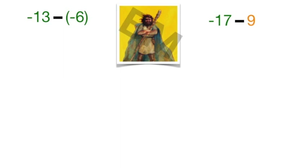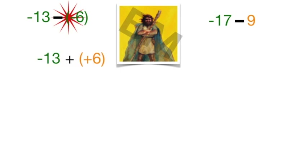The subtraction sign represents the wizard's wand, and it's pointed at the group to the right. The wand casts a spell and changes allegiance. Looking at negative thirteen minus negative six: thirteen thieves meeting with six thieves, but the wizard's wand is pointed at those six thieves — they become six soldiers. In the other problem, seventeen thieves meeting with nine soldiers, but the wizard's wand is pointed at those soldiers — soldiers become thieves. After the wizard acts, you just follow your addition rules.